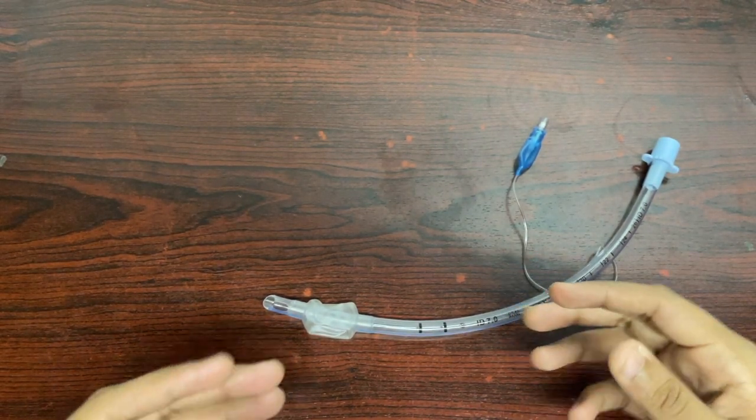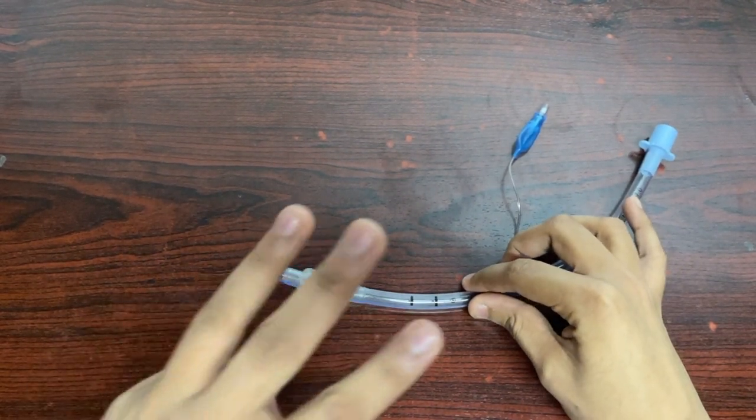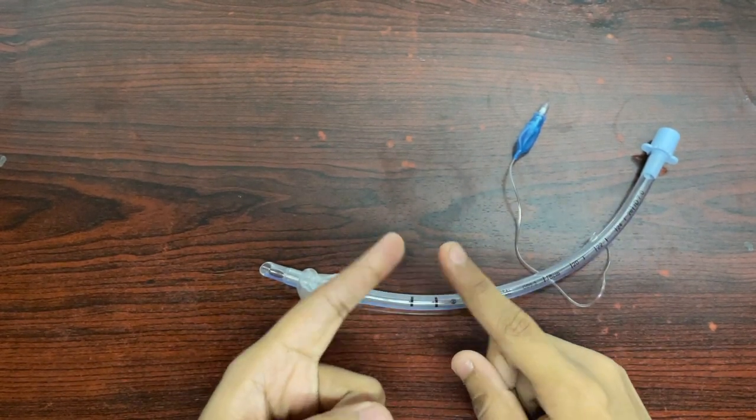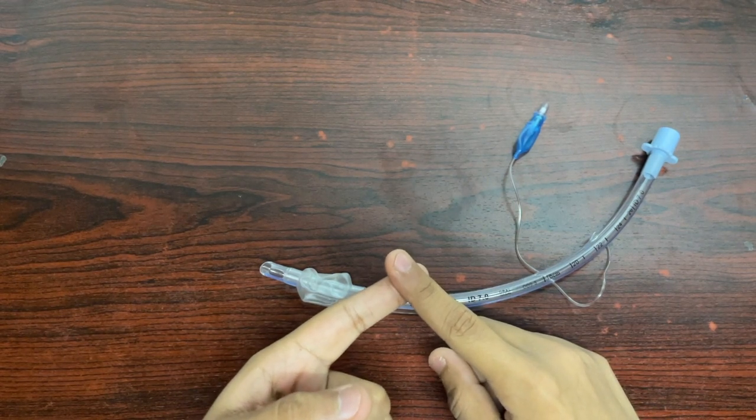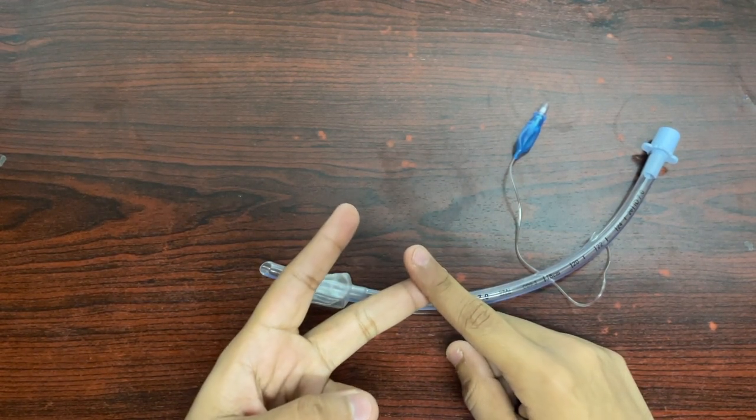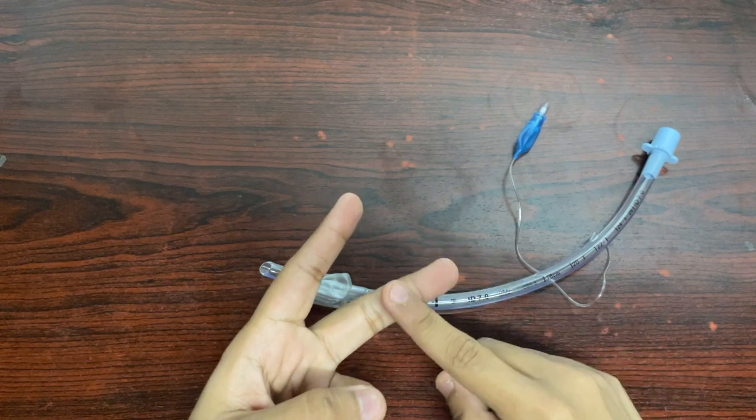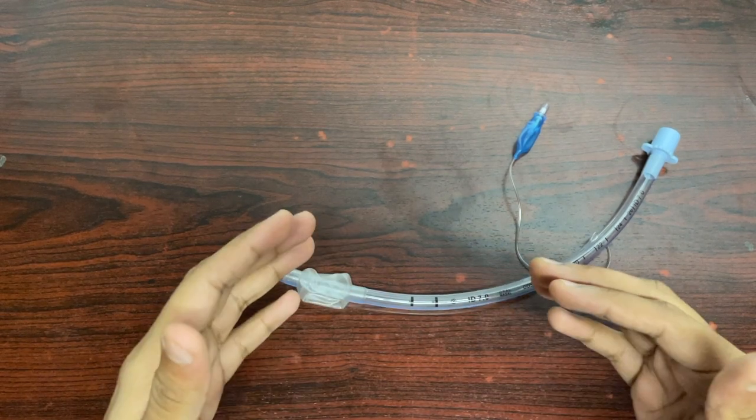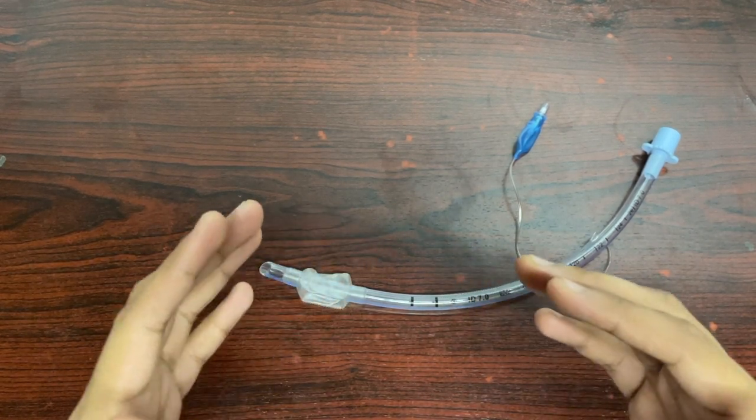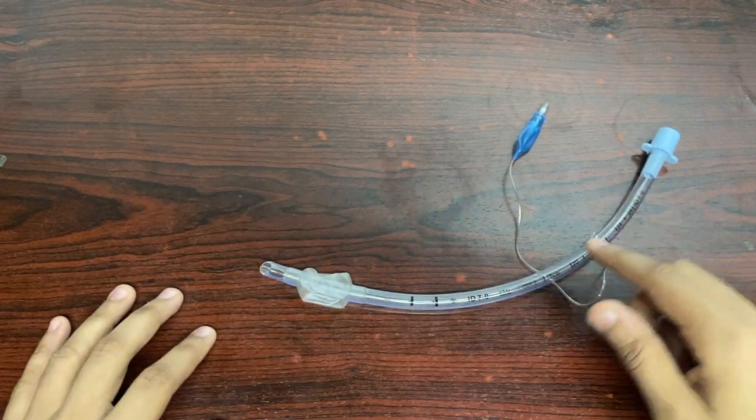The cuff of the endotracheal tube has three main advantages. First, it will prevent any sort of fluid aspiration through the trachea. Second, it will prevent any form of gaseous leakage through the main endotracheal tube. And third, it is specifically designed to maintain the position of the endotracheal tube in the trachea.